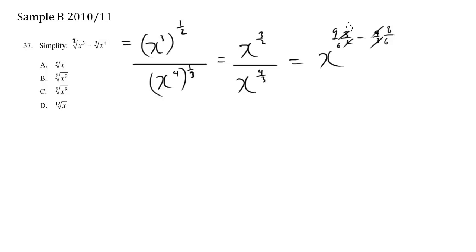So this whole exponent part becomes x to the 9 minus 8 is 1, and the denominator here is 6, so 1/6.